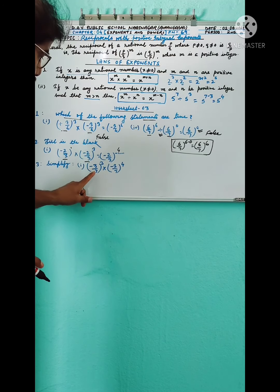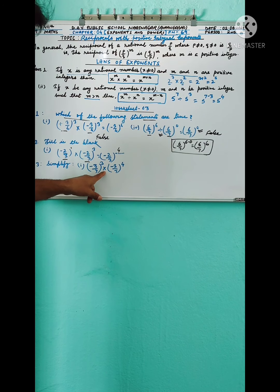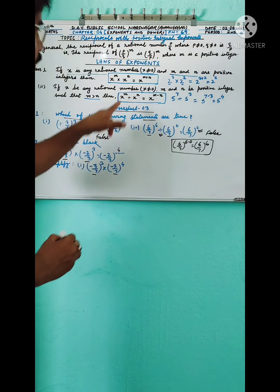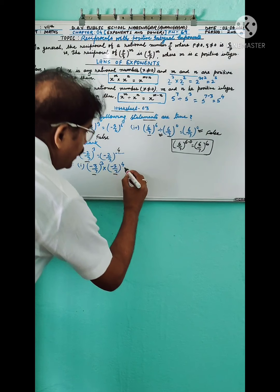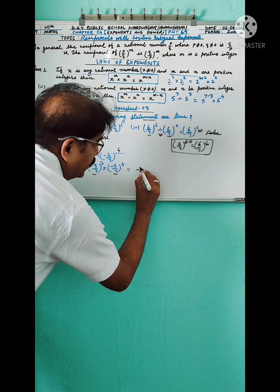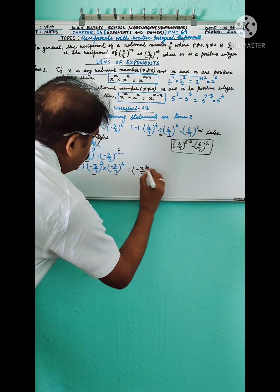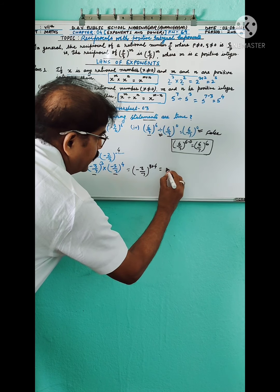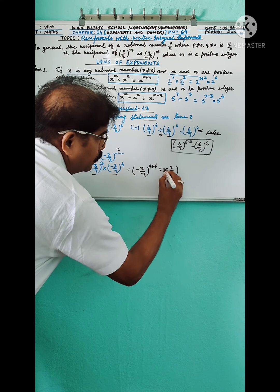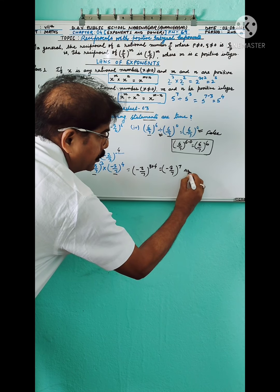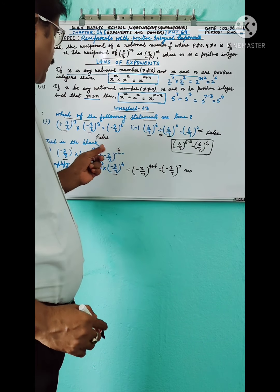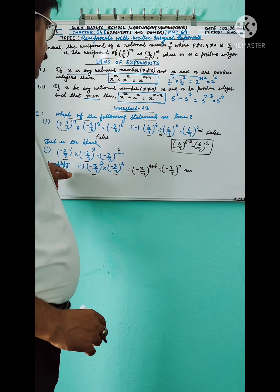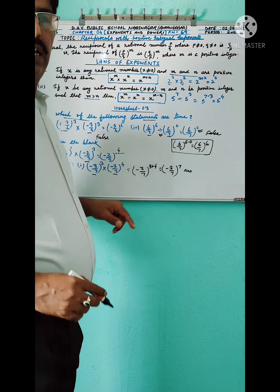Simplify: (−3/7)^q × (−3/7)^4. The bases are the same, so applying x^m × x^n = x^(m+n), we get (−3/7) to the power q plus 4. So the simplified answer is (−3/7)^(q+4). You can solve question number 3 in the same way.